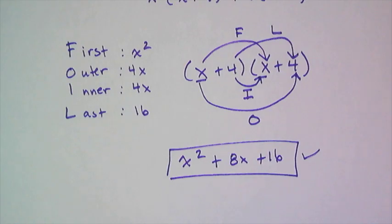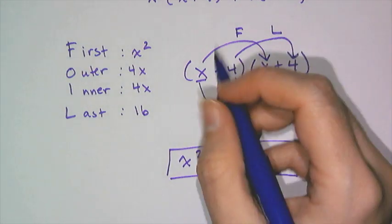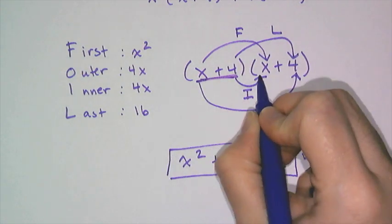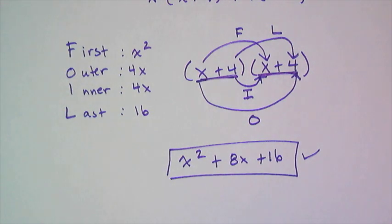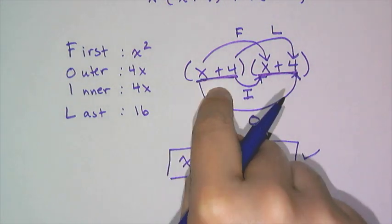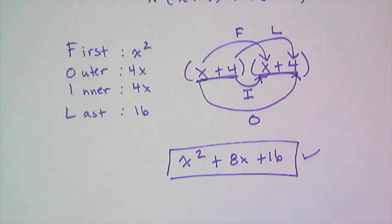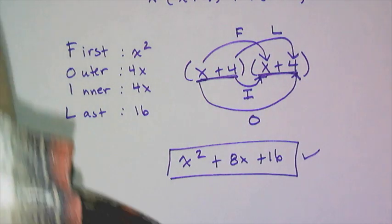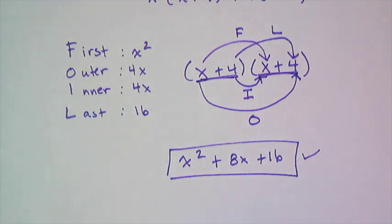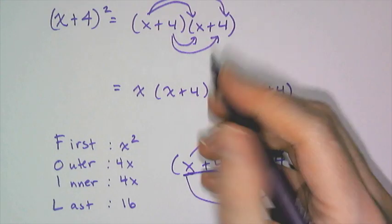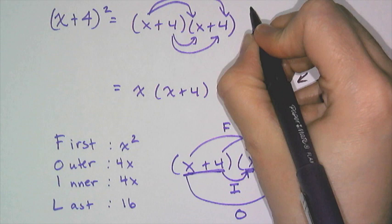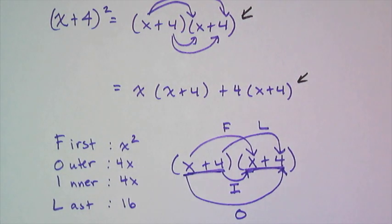There's something that I don't like about FOIL, and it's the fact that FOIL only works when you're multiplying two terms times two terms. If I made this x plus y plus 4 and that x plus 4, then FOIL doesn't work anymore because you have three terms in one thing and that would be a triple distribution, not a double distribution.